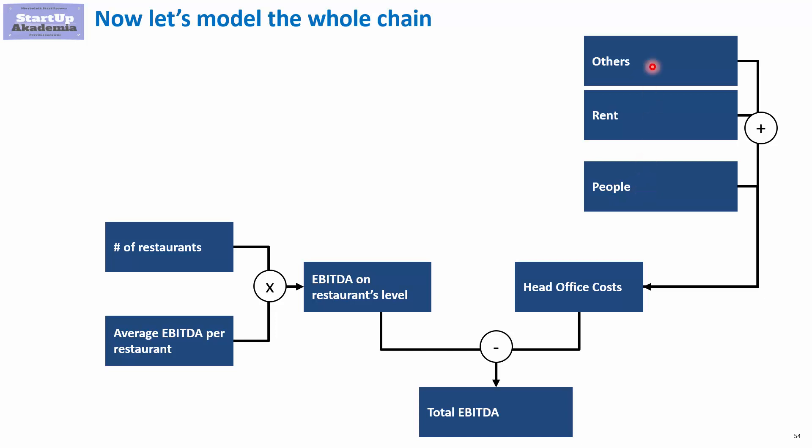In some cases it makes sense to divide 'others' into smaller cost positions — for example, leasing of machines bought for the restaurants and also furniture. Another important cost item is sales and marketing: all fees paid to third parties and money spent on marketing.